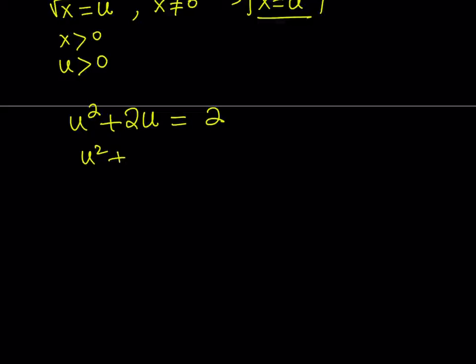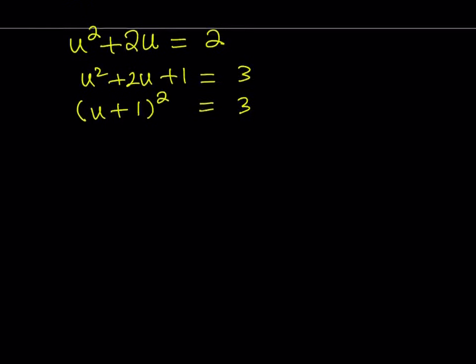We can add 1 to both sides to complete the square. You could also use the quadratic formula. There is more than one way to do it. The left-hand side becomes u plus 1 quantity squared equals 3.